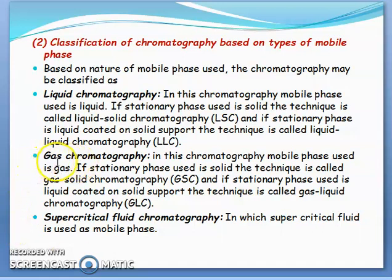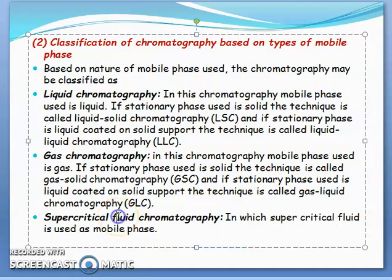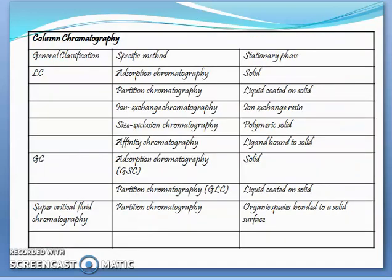The second type uses gas as the mobile phase — gas chromatography. If the stationary phase is solid, it is called gas-solid chromatography; if the stationary phase is liquid coated on solid support, it is called gas-liquid chromatography. The third type of mobile phase is supercritical fluid, giving supercritical fluid chromatography. So the overall classification based on mobile phase is liquid chromatography, gas chromatography, or supercritical fluid chromatography.